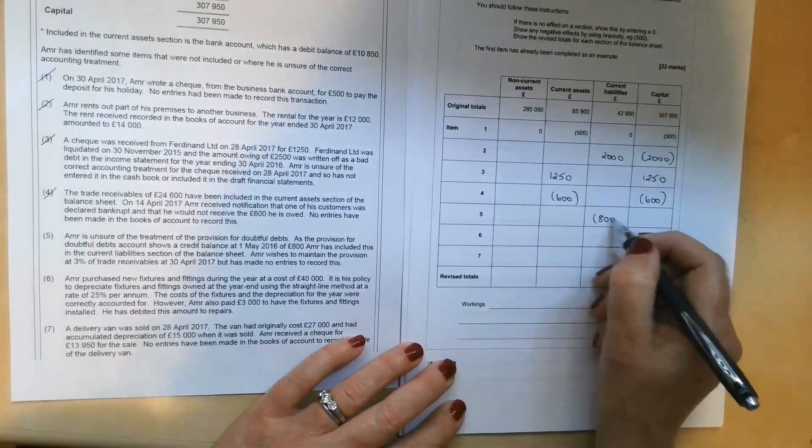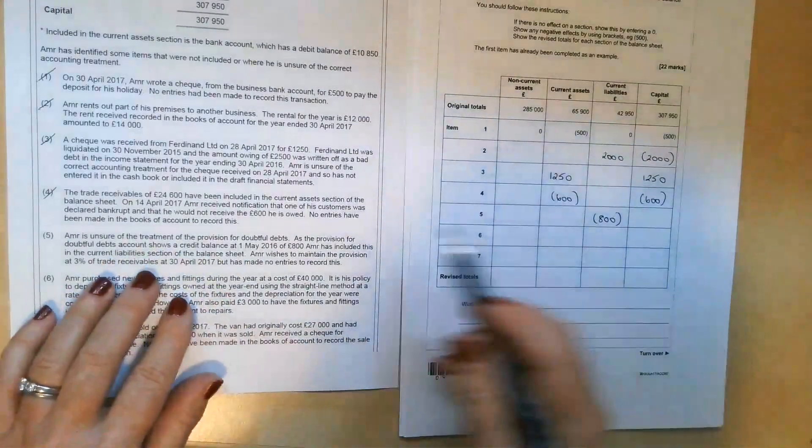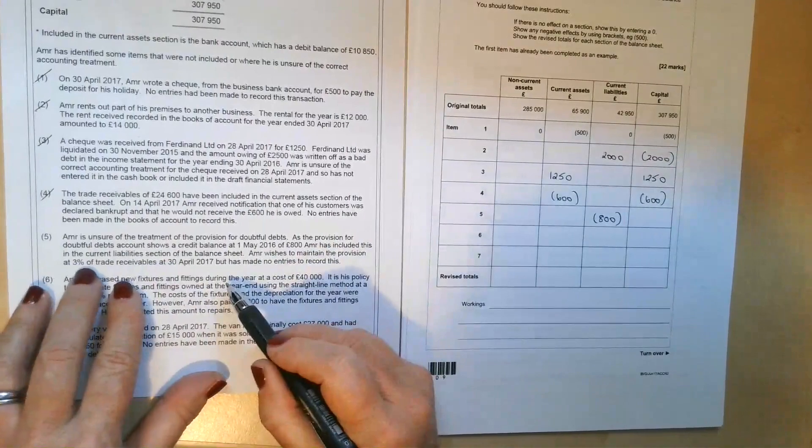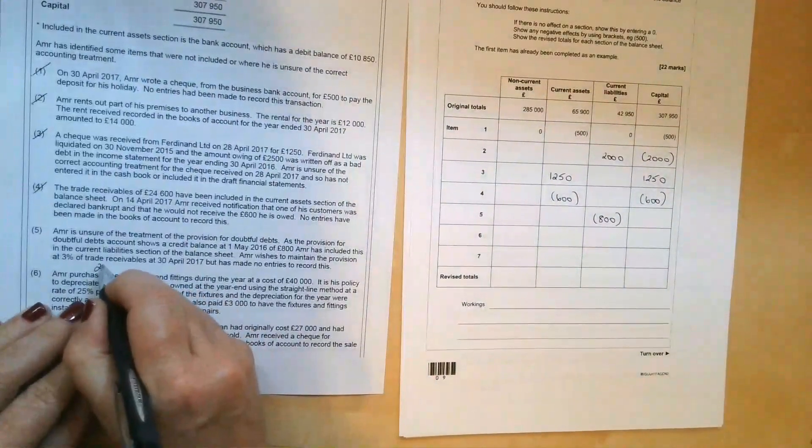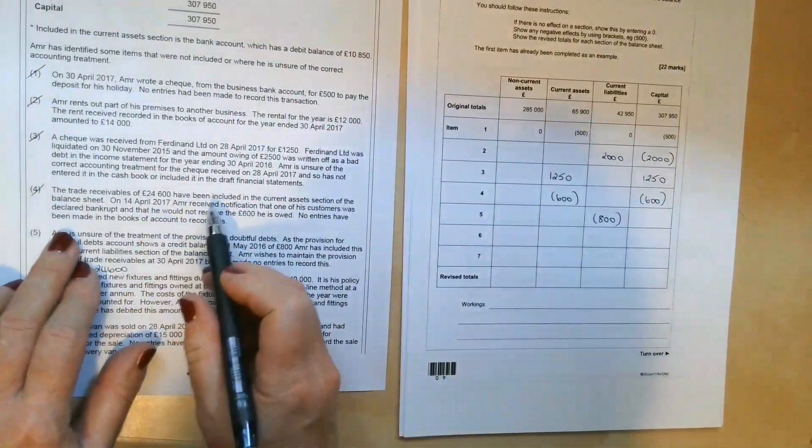So the first thing we can do is remove £800 from the current liabilities section. But let's just see how much it needs to be. It says, Amir wishes to maintain the provision at 3% of the trade receivables. Now, if you remember, the trade receivables was £24,600. That was given to us up here in number four, but we wrote off an irrecoverable debt.